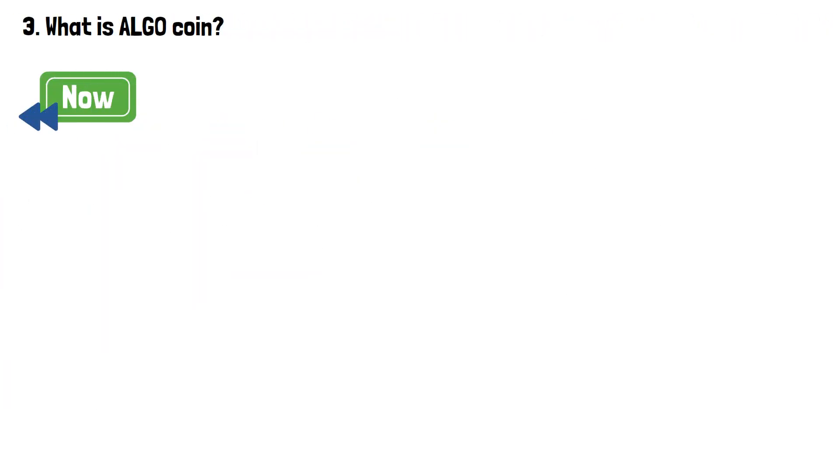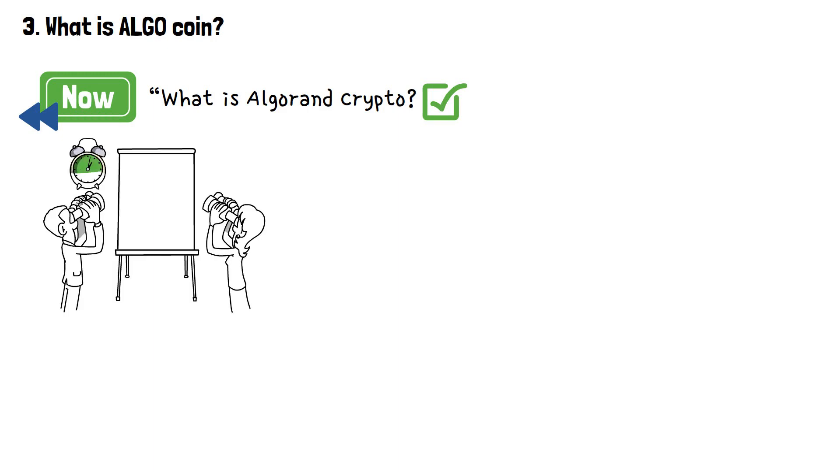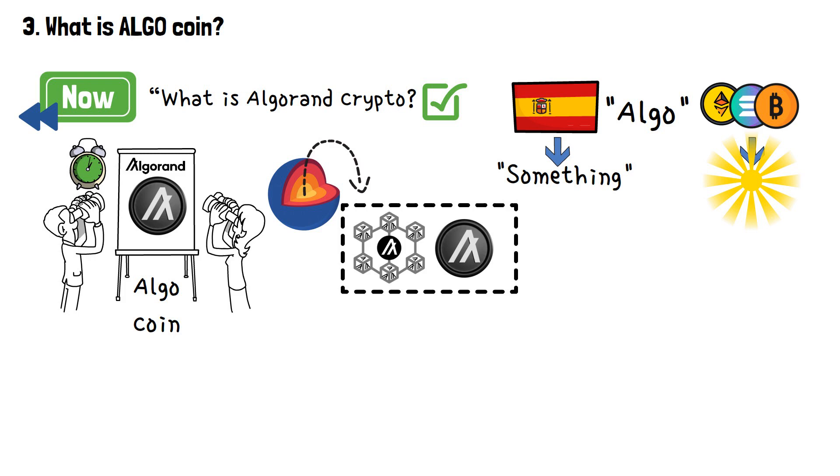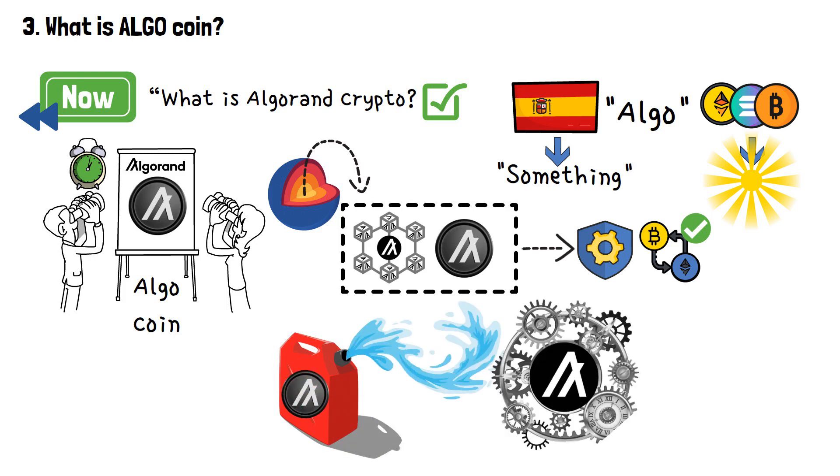By now, the question of what is Algorand in crypto is partially answered. But in order to see the whole picture, it's time to address the other inseparable part of the Algorand project: the Algo coin. In Spanish, Algo means something, but in crypto, it means something way more interesting. At its core, Algo serves as the native cryptocurrency of the Algorand blockchain, playing a pivotal role in securing the network and facilitating seamless transactions. It operates as the lifeblood, fueling the vibrant ecosystem that Algorand has constructed.